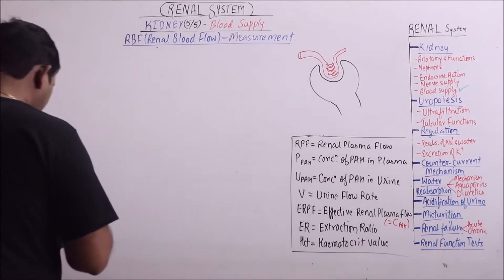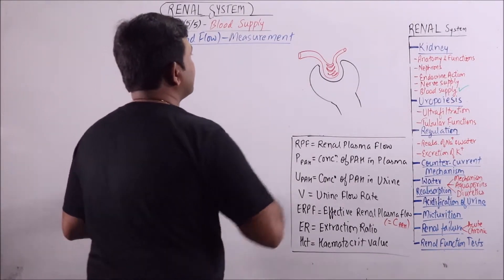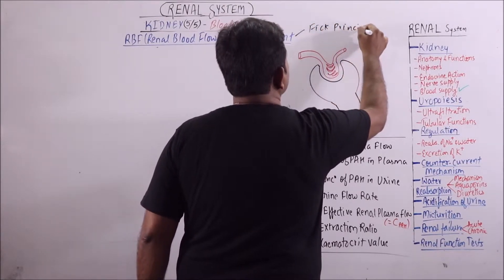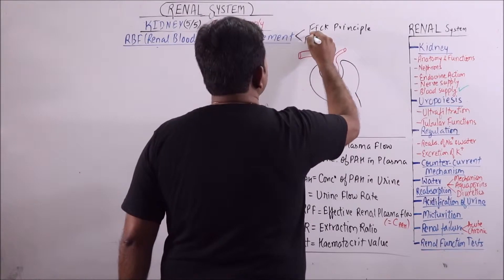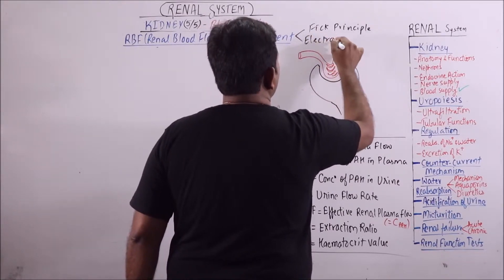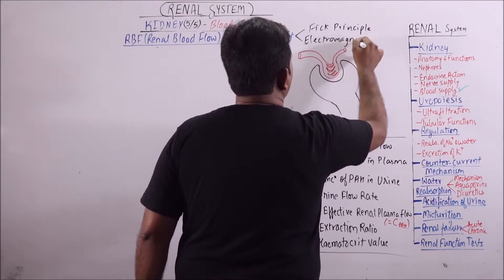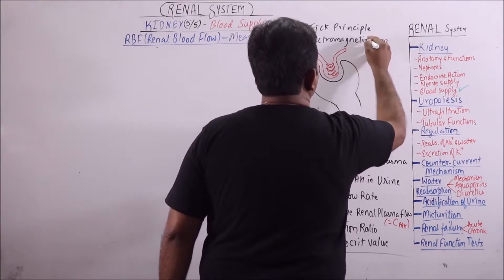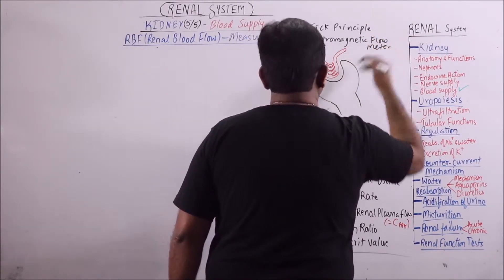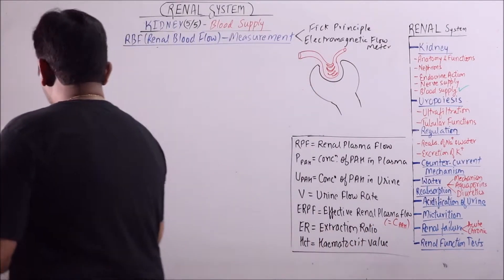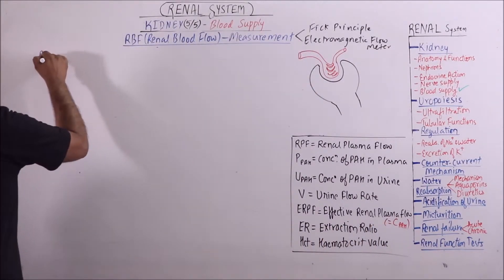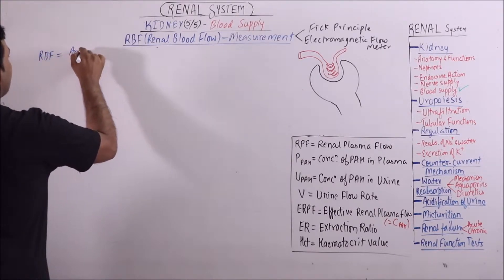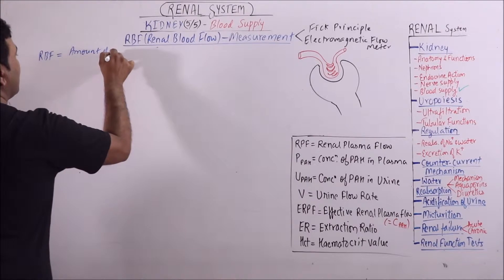RBF is mainly measured by Fick principle. It can also be measured by electromagnetic flow meter. Now, according to Fick principle, RBF can be calculated by the amount